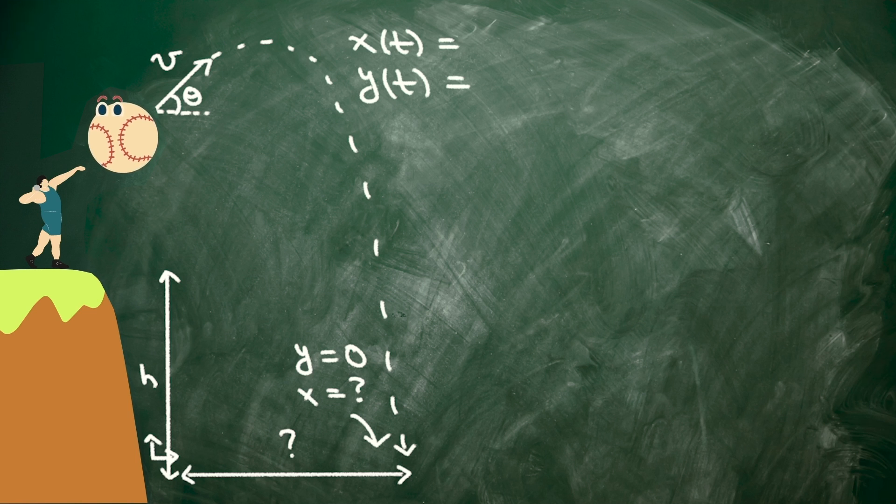Well, remember that there's no acceleration in the horizontal direction. So the ball is just moving in the x direction with constant speed, whatever it had to begin with. That's v times cosine of theta. And so we have x of t equals v cosine theta times t.